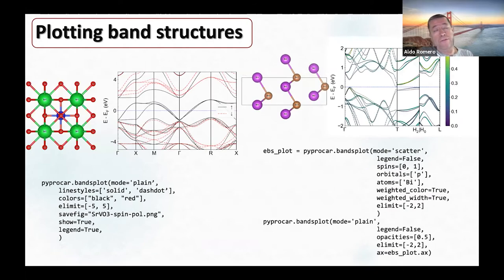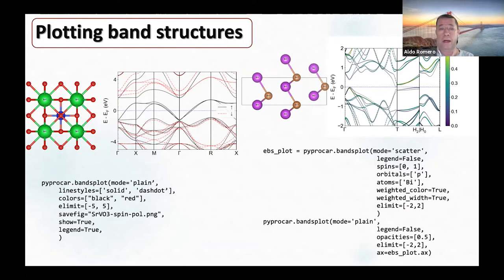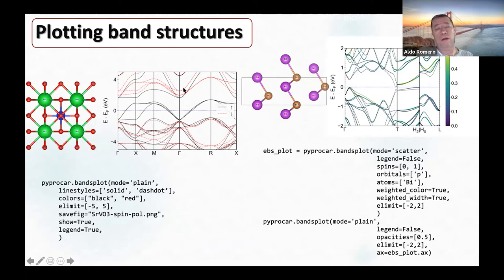I can also select specific atoms, select the species, or select the spin channel when you have a non-collinear calculation. We can also select the line type to use—for example, solid for one type and dashed for another—which is nice for comparing different band structures.